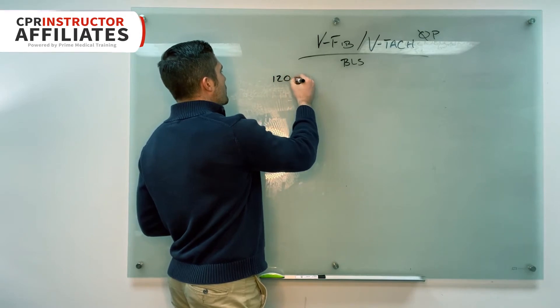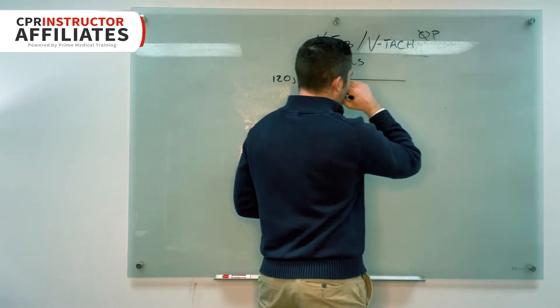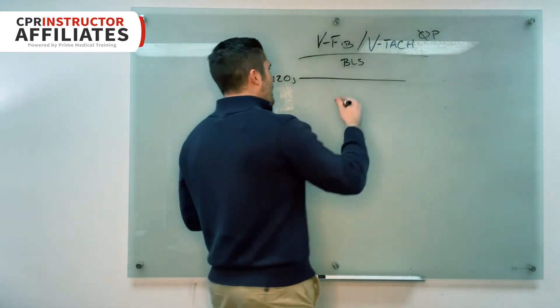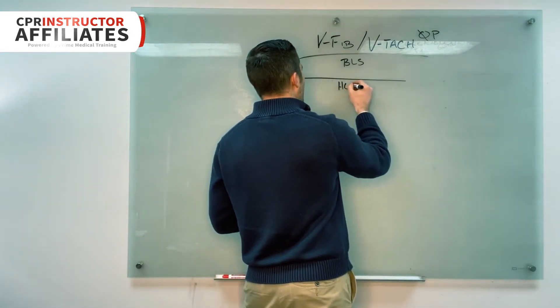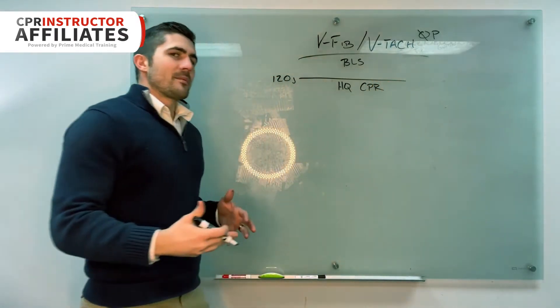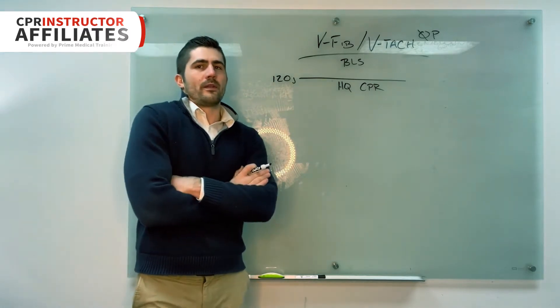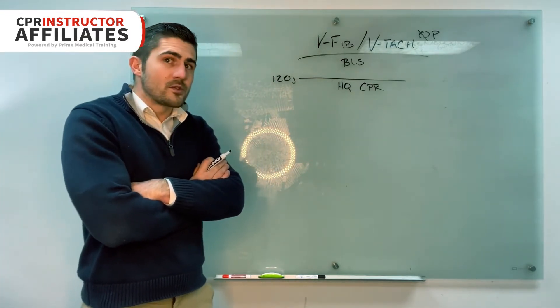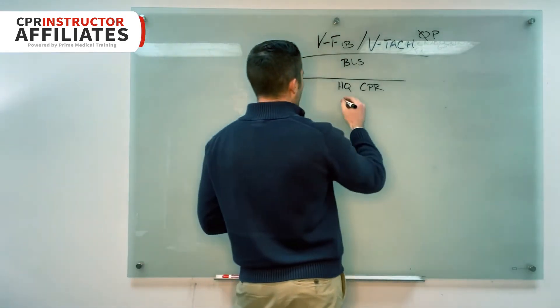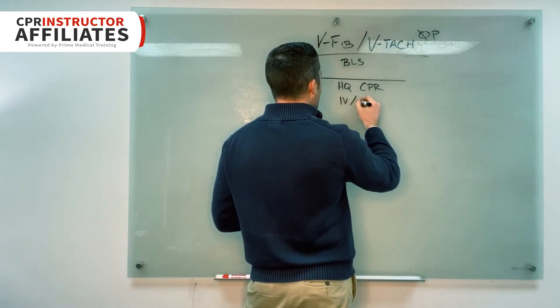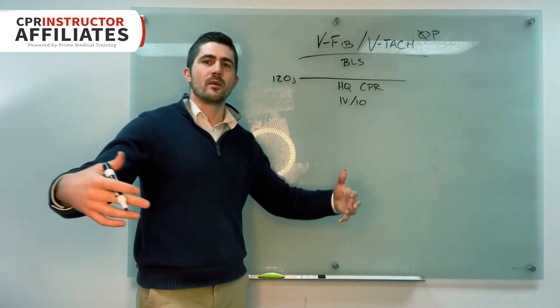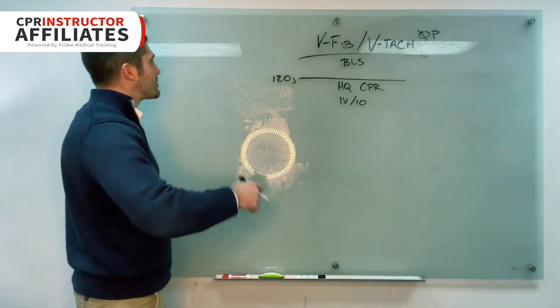So we'll do 120 joules, draw a line. I'll say alright now what do we do as soon as we shock? We're going to go back into high quality CPR and I write it up here, HQ CPR. I'll ask them how long are we doing this for and they'll tell me two minutes. Great.